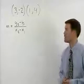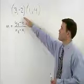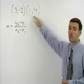In this problem, we're asked to find the slope of the line that passes through the points 3, negative 2, and 1, 4.